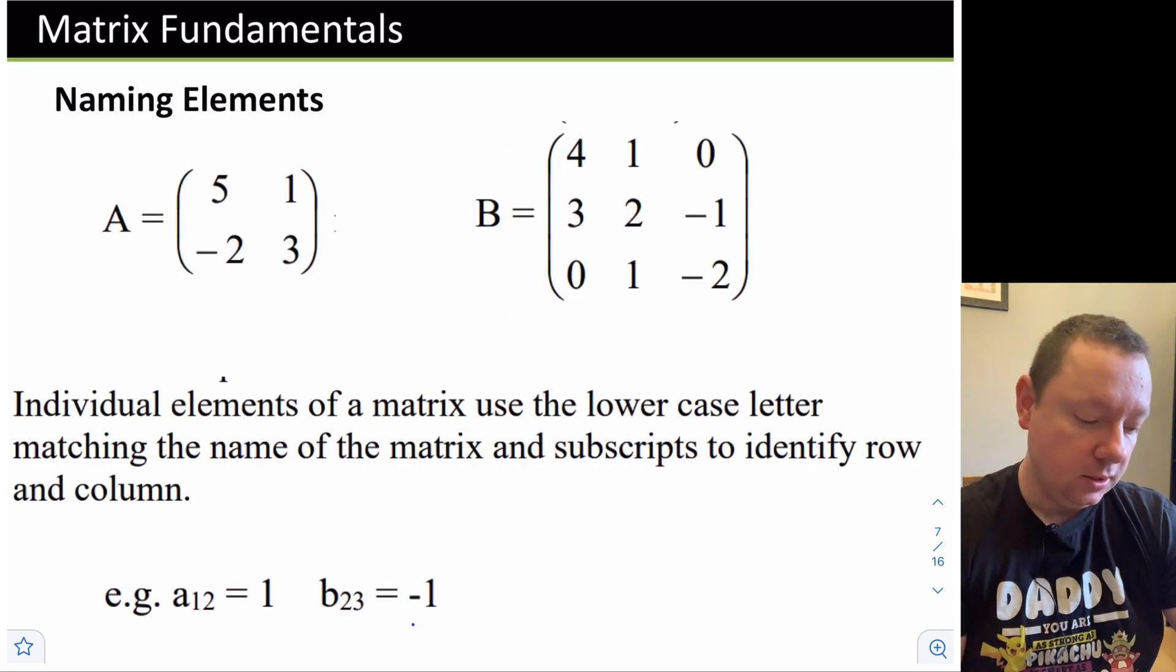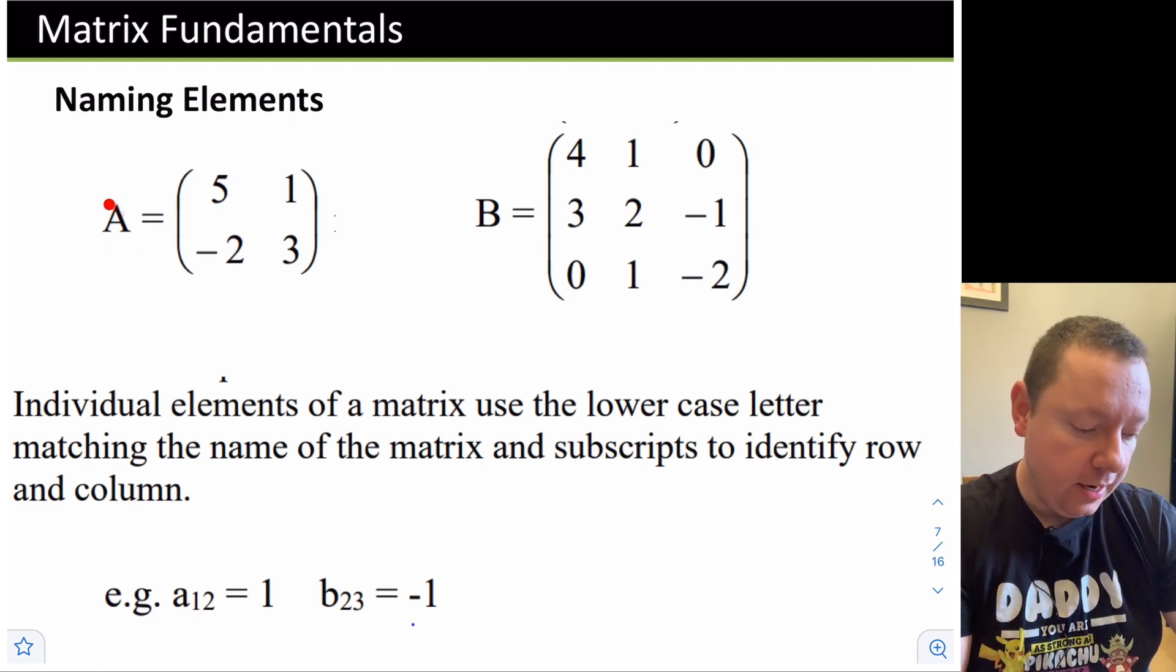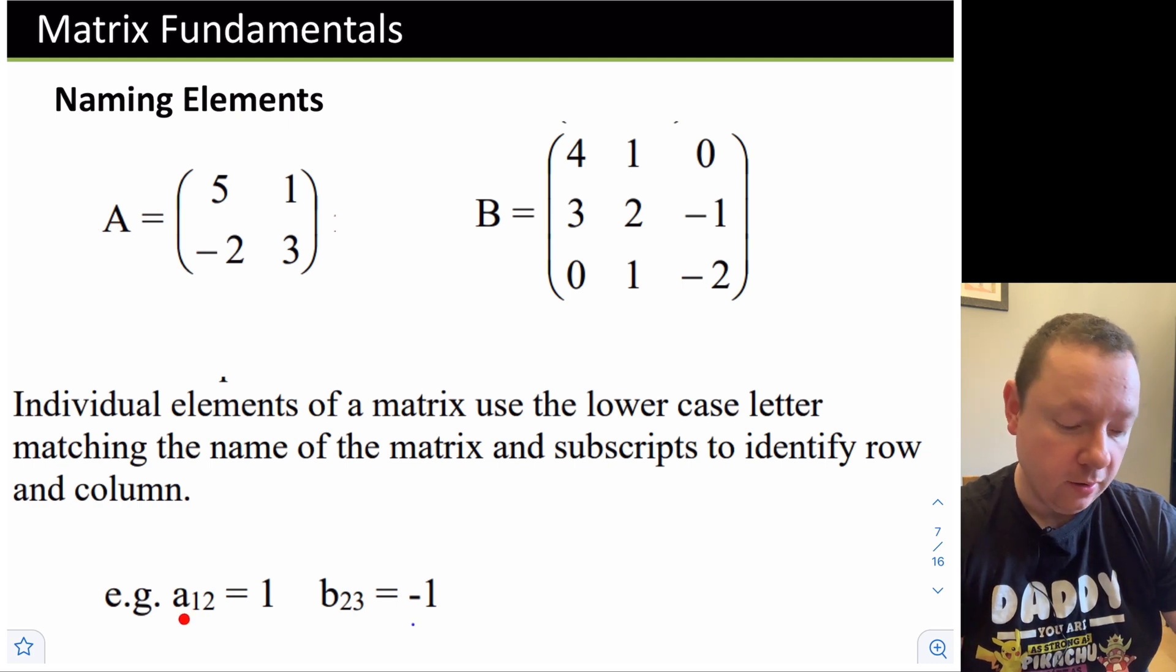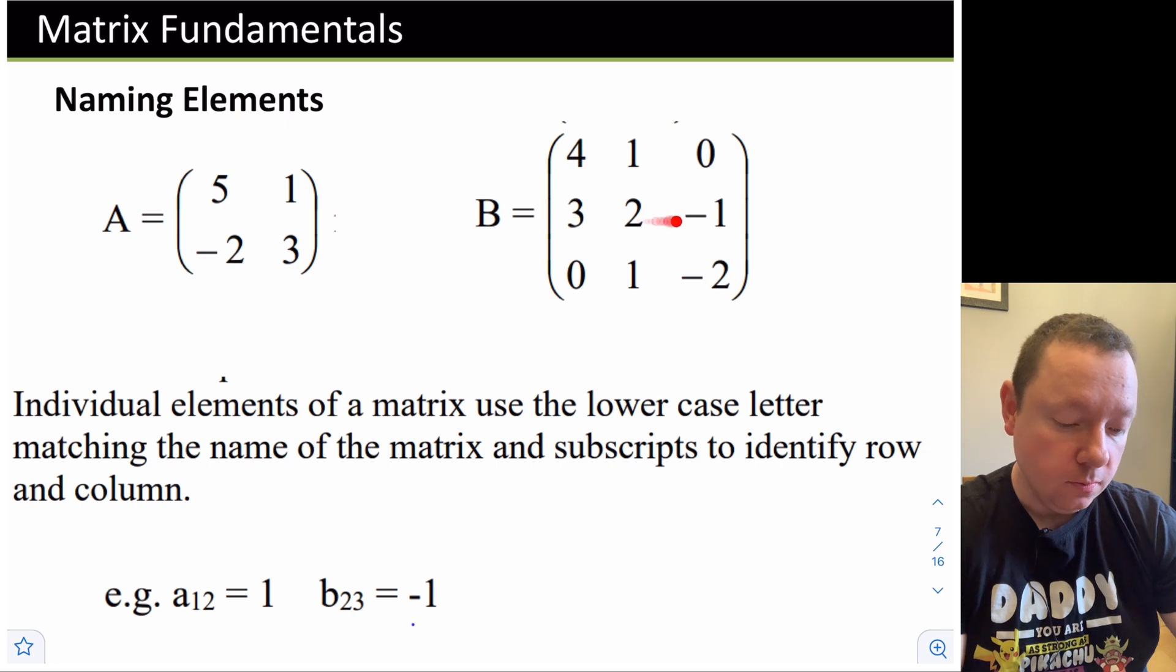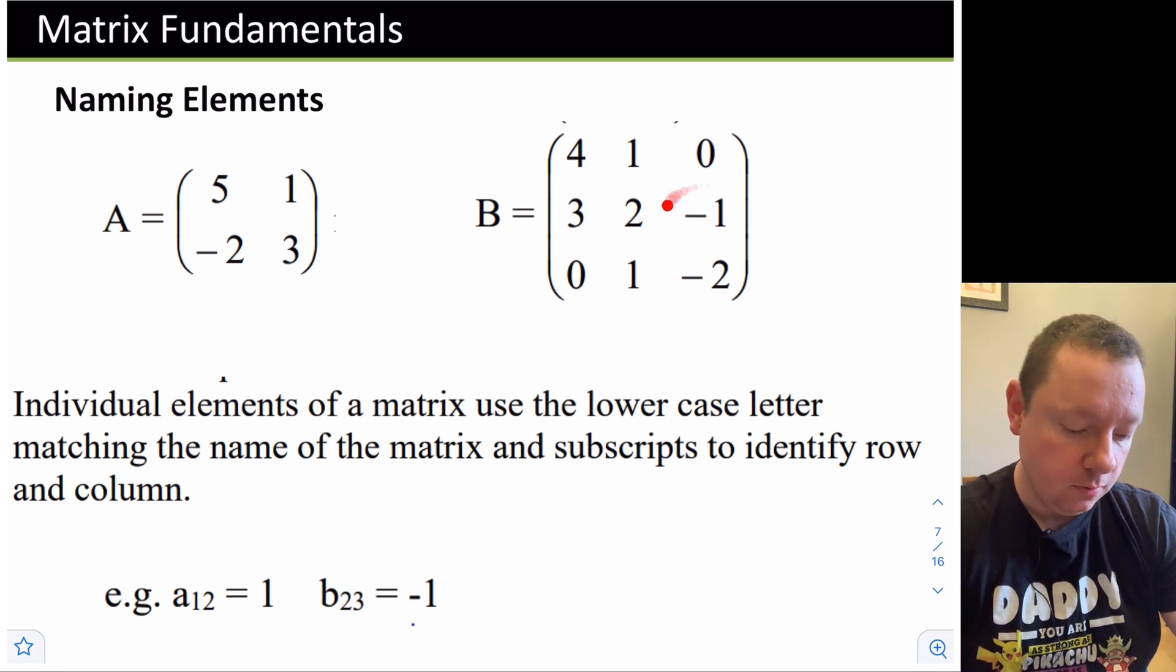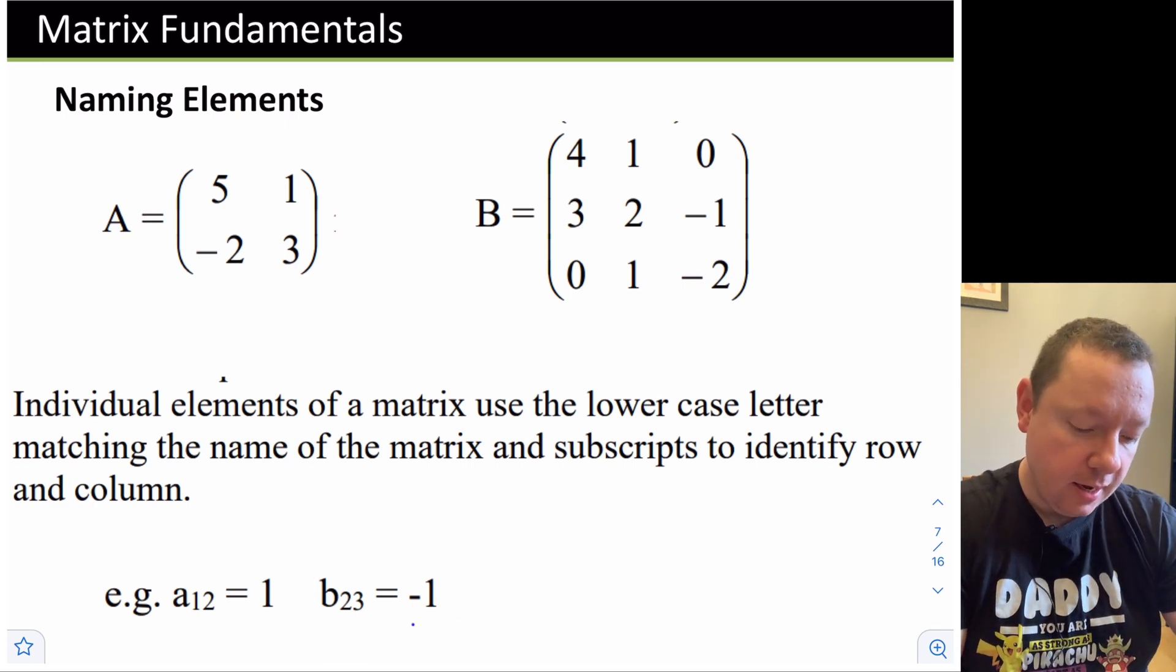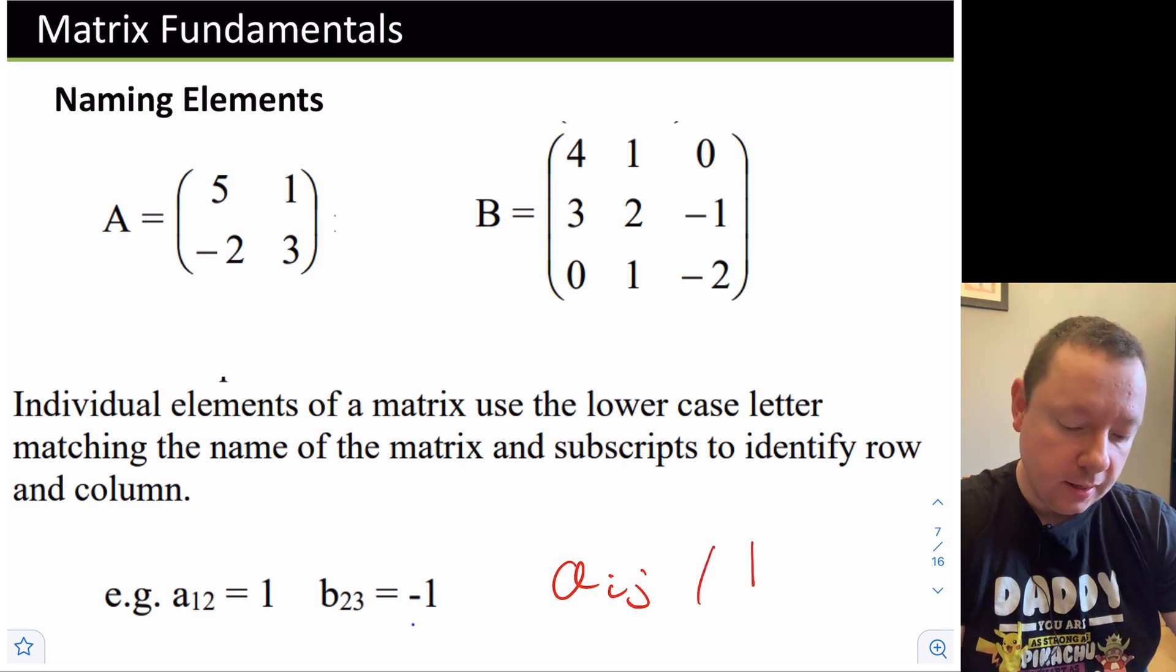Here we can name individual elements in a matrix. If we look at this matrix A, then we use the little letter a. The first number is the row, and the second number is the column. So row 1, column 2, is number 1. So a_1,2 equals 1. Similarly, if we look at B_2,3, row 2, column 3, is -1. So B_2,3 would be -1. In general, we say that's A_i,j, or for matrix B, B_i,j.